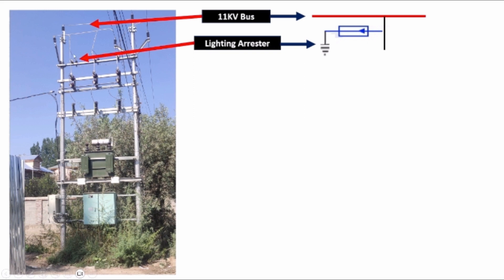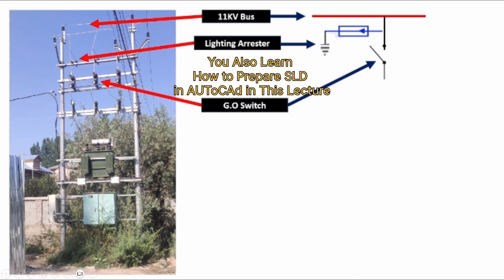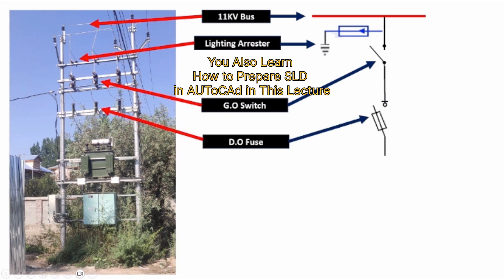From the lightning arrester, the connections are going to the dropout fuse gang switch, that is the gang operated switch. These are the three gang operated switches and it can be represented like this. From the gang operated switch, the connections are going to the dropout fuse, and the connections are like this.